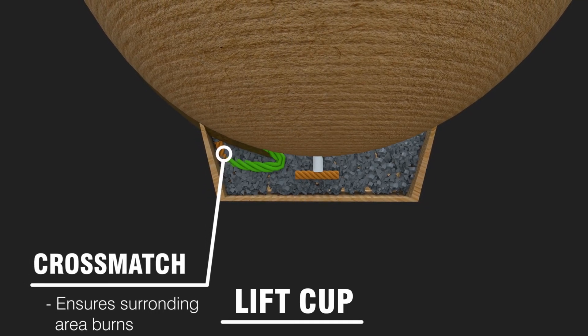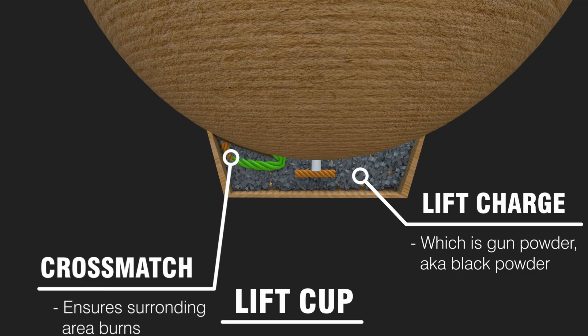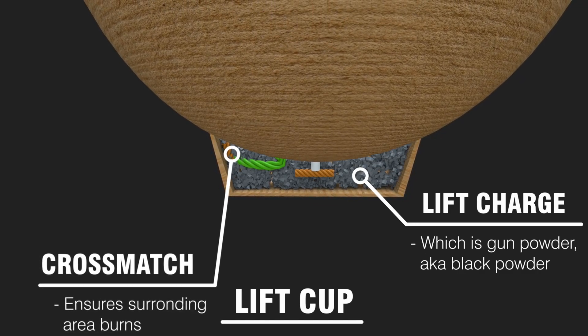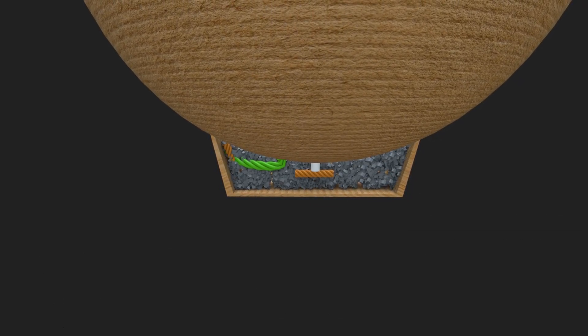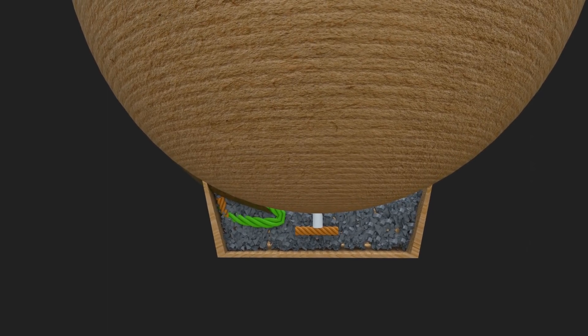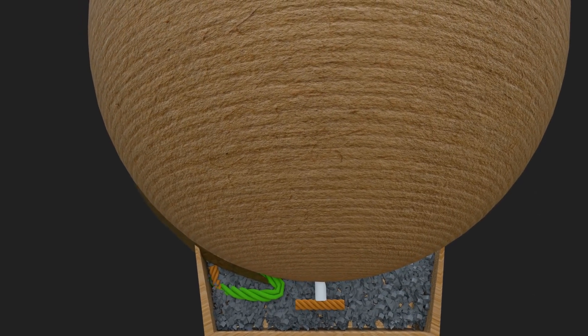Within the lift cup, you have the aptly named lift charge, which is also black powder. Once lit, the powder in the cup rapidly ignites, producing gases which propel the shell skyward while simultaneously igniting the timer fuse.